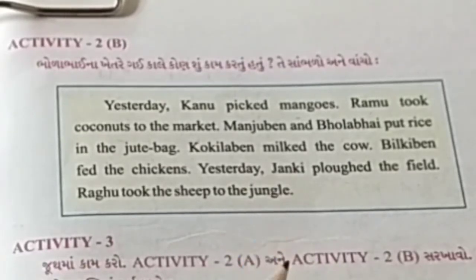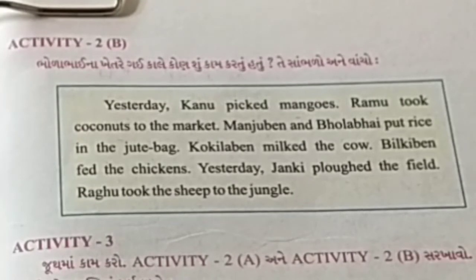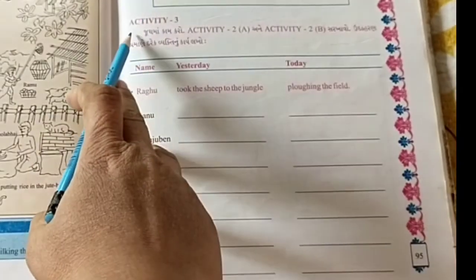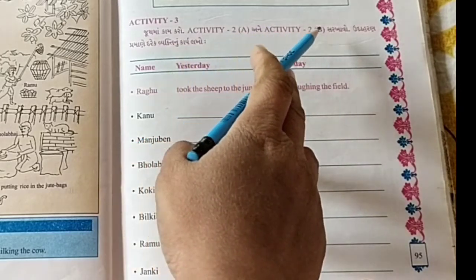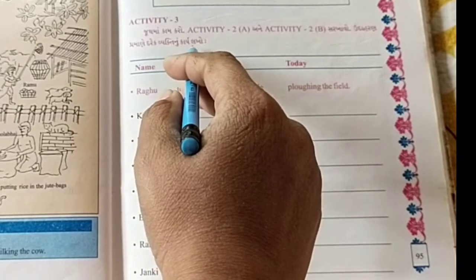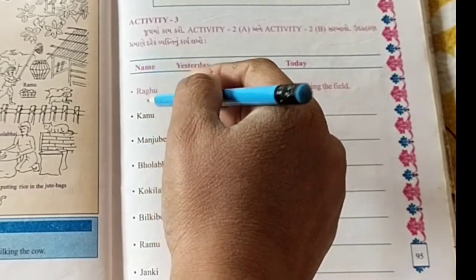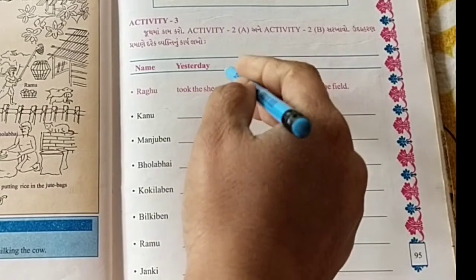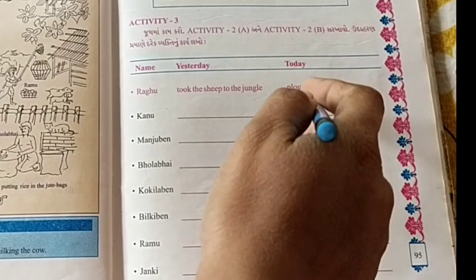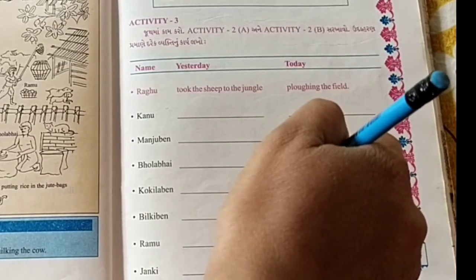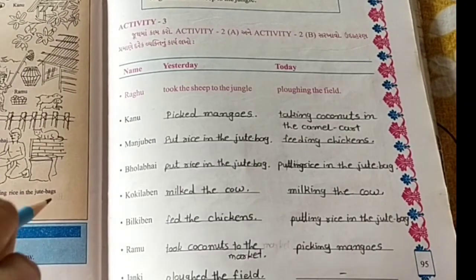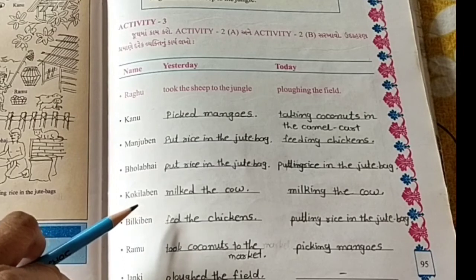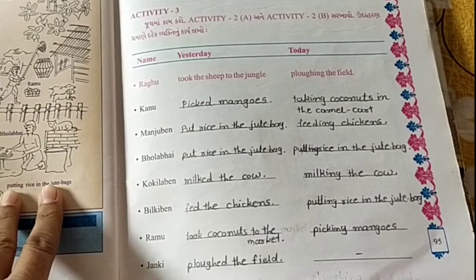અને જાનકી આજે બોળા ભાઈ ના ફાર્મ માં ન હતી. હવે આપણે આગળ જોઈએ Activity 3. Activity 3 - જૂથ માં કામ કરો. Activity 2A અને Activity 2B સરખાવો. Friends, અહીં તમને વ્યક્તિઓના નામ આપેલા છે, અને Yesterday and Today - ગઈ કાલ અને આજ - કોણ શું કારિયા કરે છે, એ આ વ્યક્તિઓની સામે લખવાનું છે. Let's read.